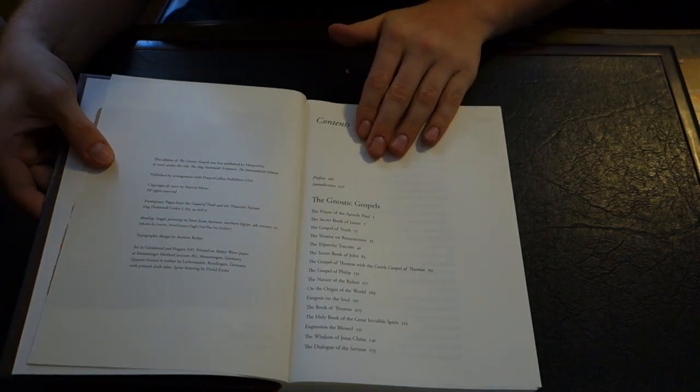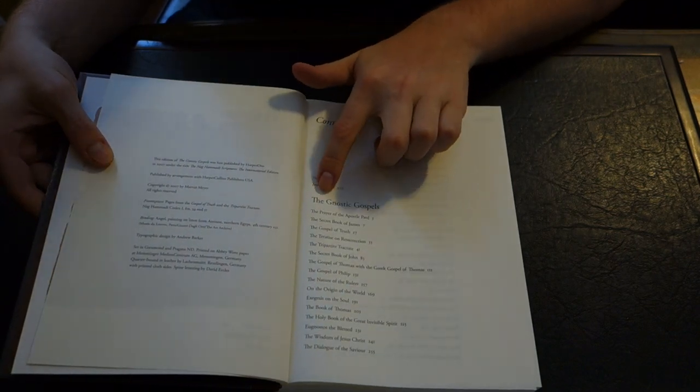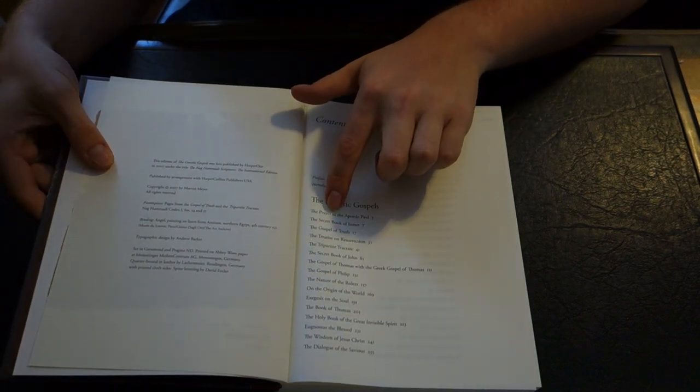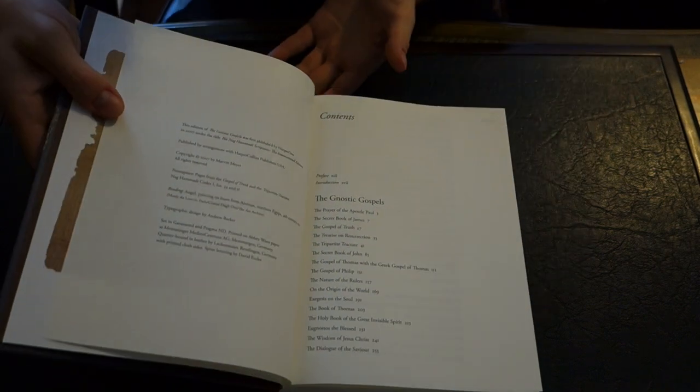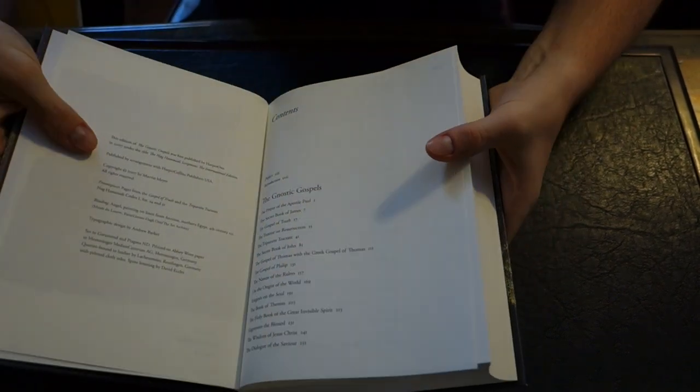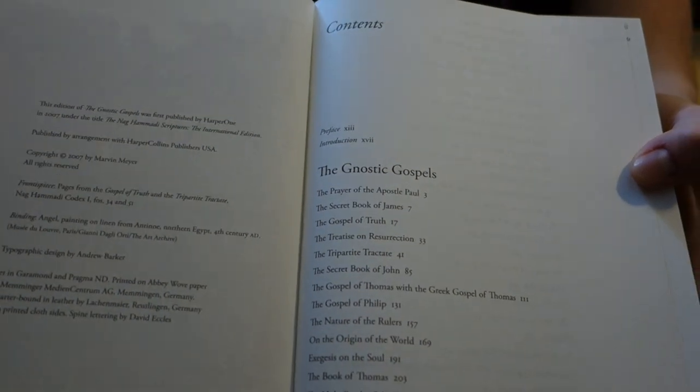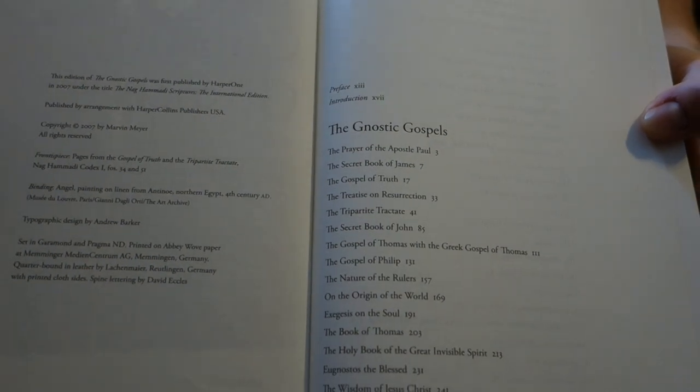Let's open it up here. And then you'll have the table of contents here and all. Let's bring that up here, and maybe you can get a closer look. You can freeze the frame, and you can see the different writings that are within the book.